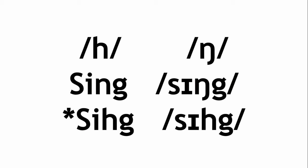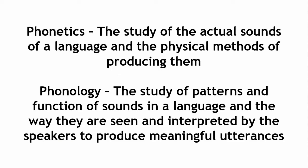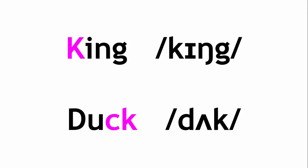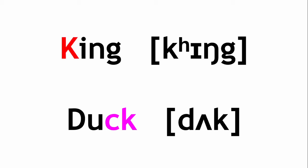A common thing people get confused about is the distinction between phonetics and phonology. Phonetics deals with the physical production and transcription of sounds, and pays little to no attention to the actual meanings conveyed by them. Phonology, on the other hand, looks at how specific sounds are grouped into phonemes and used to convey information. For example, English speakers interpret the k in 'king' and the ck in 'duck' to be exactly the same sound, and phonemically they are. However, when you use a phonetic transcription, you see a little h after the k in 'king'.